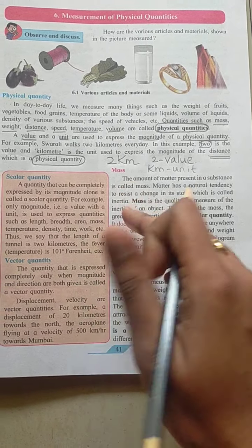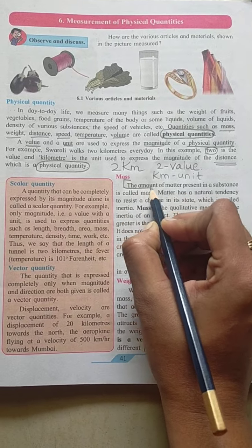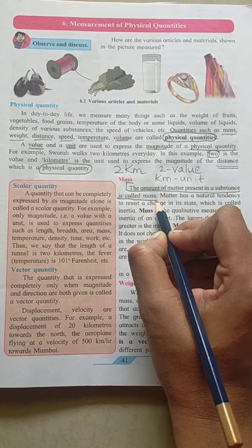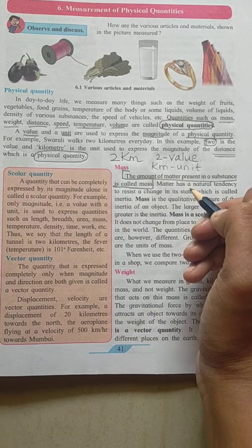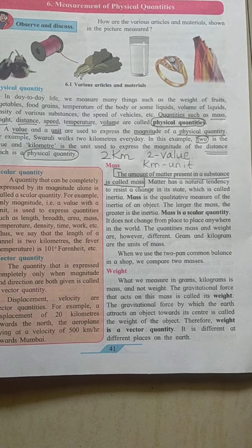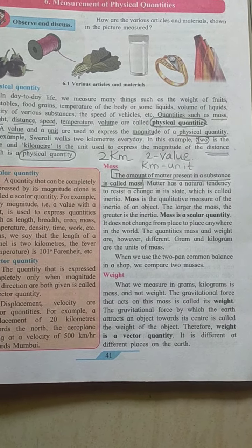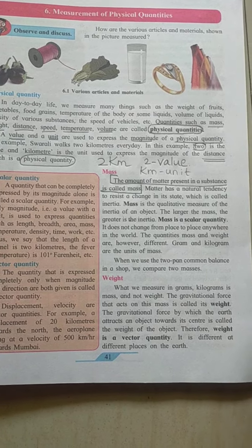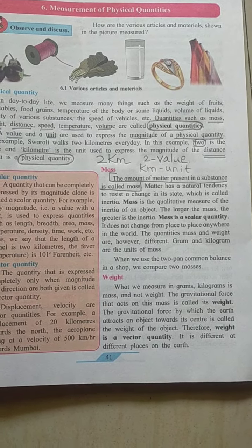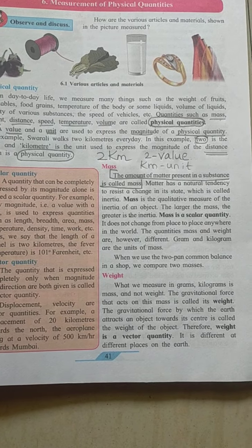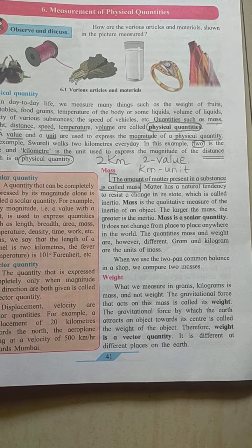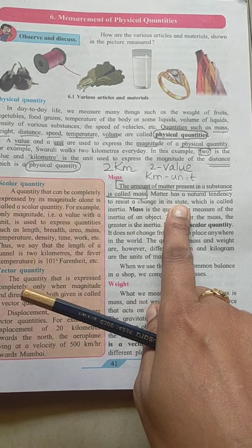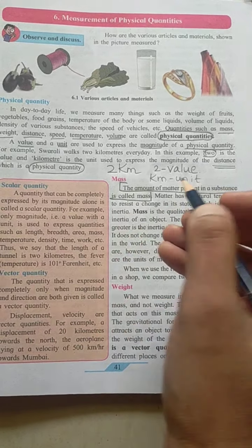What is mass? The amount of matter present in a substance is called its mass. Matter is the smallest, indivisible particle that is present in any substance. The amount of matter present in any substance is called its mass.